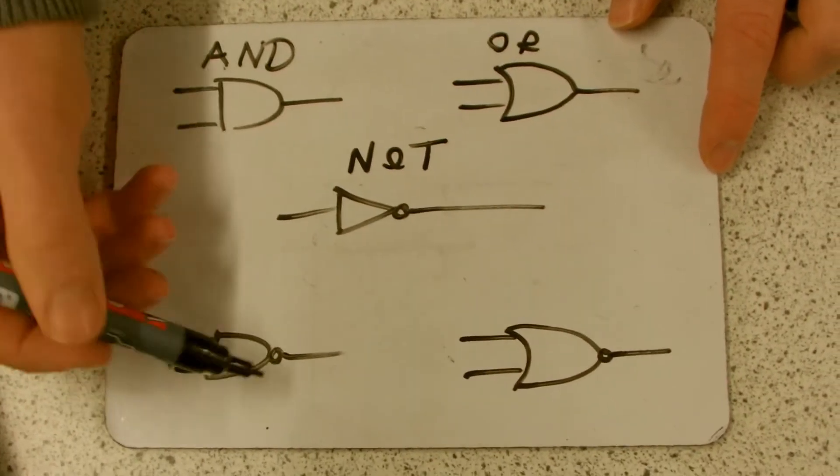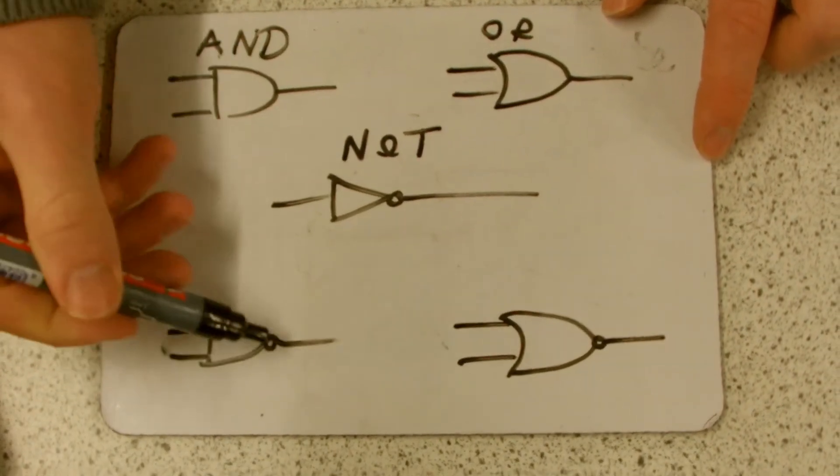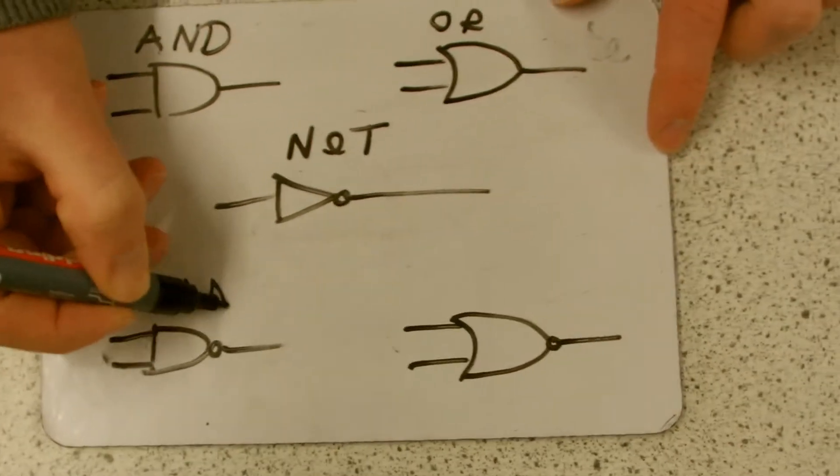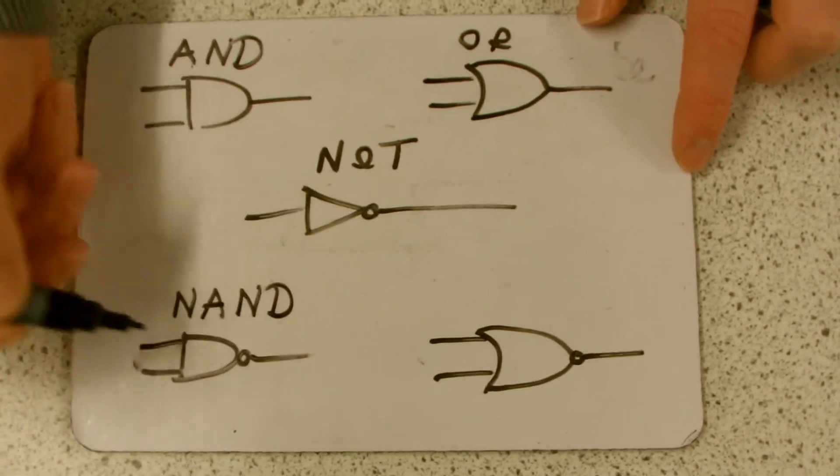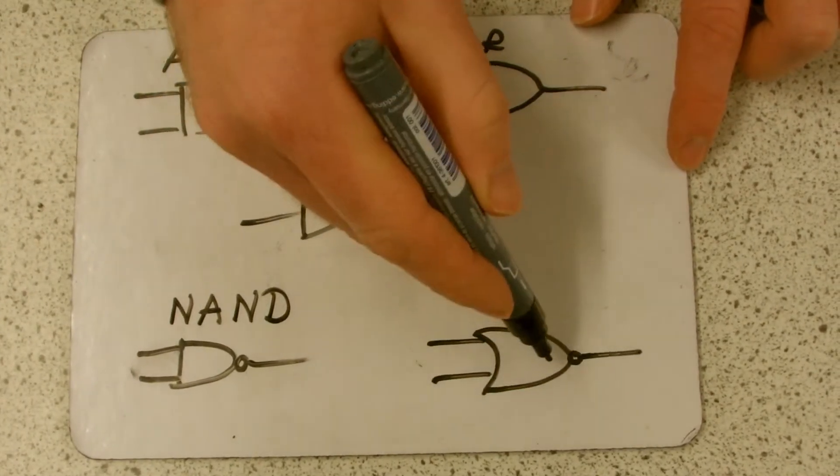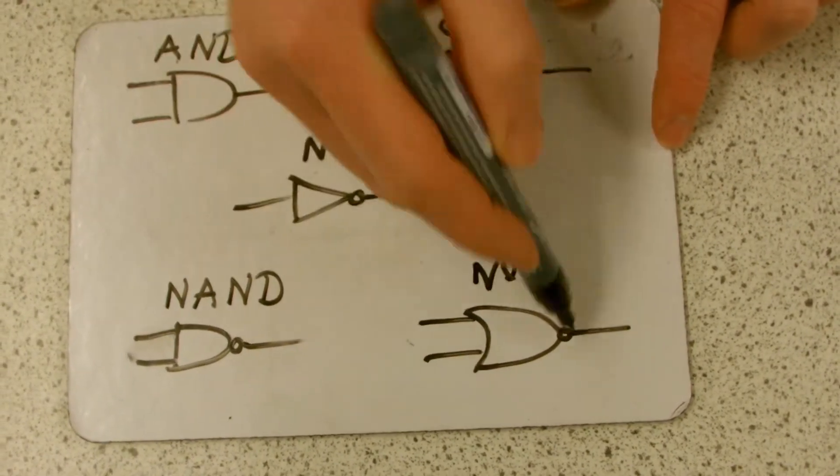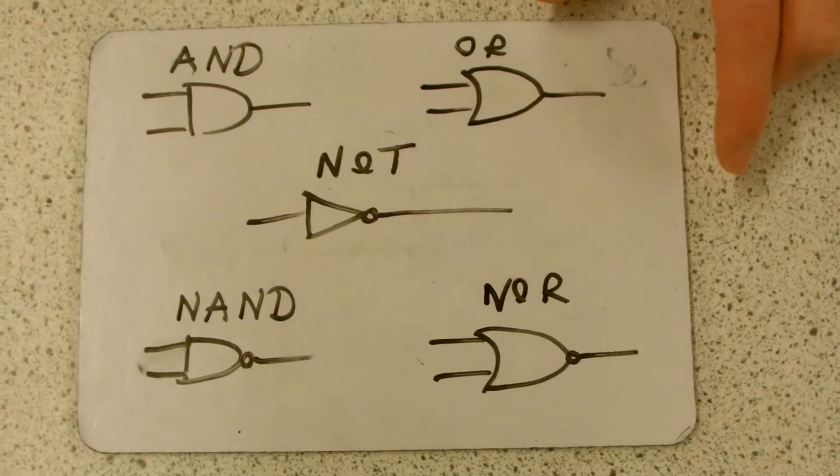And you can see the NAND is just like an AND, but with part of the NOT on the front there. Easy to remember. And the NOR, just like an OR, but with the little pip for the NOT on after as well.